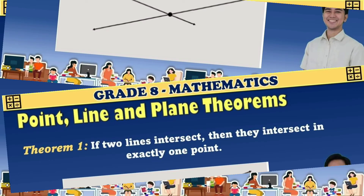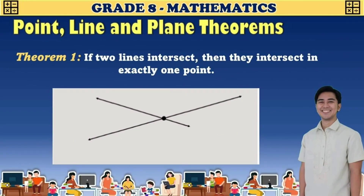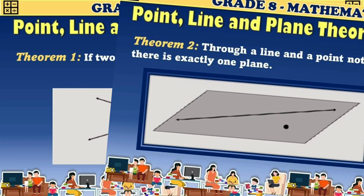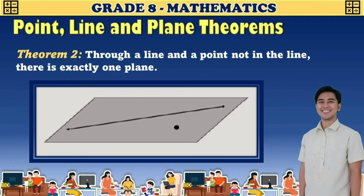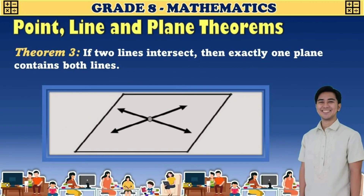Here are the three theorems in geometry. Theorem 1: If two lines intersect, then they intersect in exactly one point. Theorem 2: If a point lies outside a line, then exactly one plane contains both the line and the point. Theorem 3: If two lines intersect, then exactly one plane contains both lines.